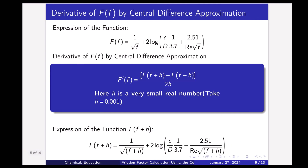We can use central difference approximation to find the derivative of F(f). The central difference formula is: F′(f) = [F(f+h) − F(f−h)] / (2h), where h is a very small number. You can take h = 0.001, which is good enough.